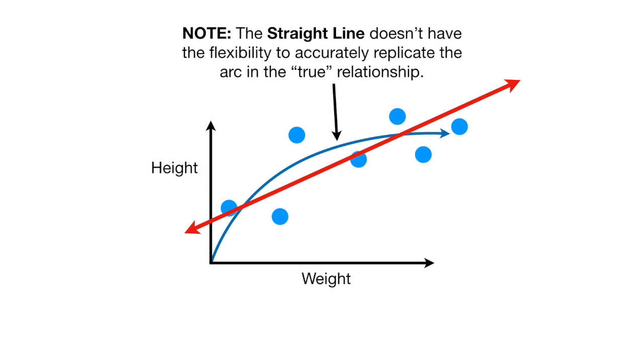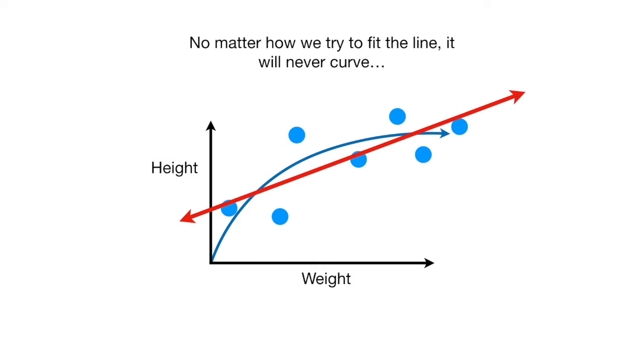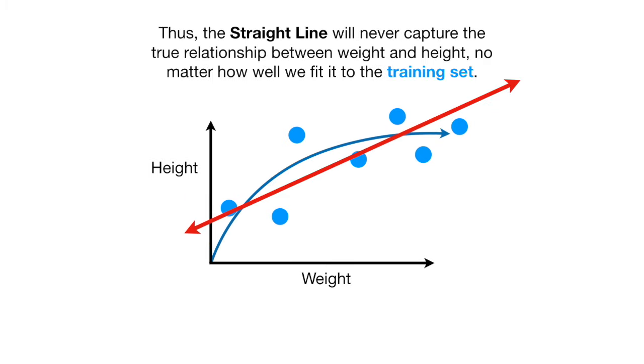Note, the straight line doesn't have the flexibility to accurately replicate the arc in the true relationship. No matter how we try to fit the line, it will never curve. Thus, the straight line will never capture the true relationship between weight and height, no matter how well we fit it to the training set.